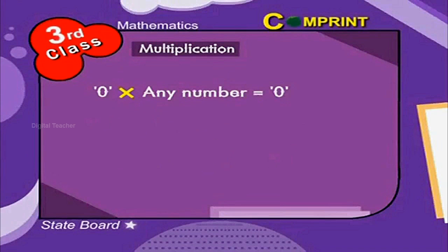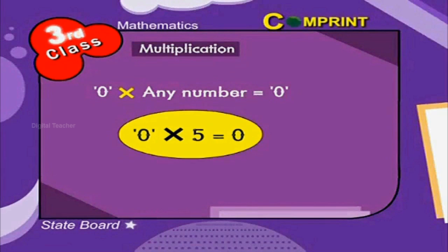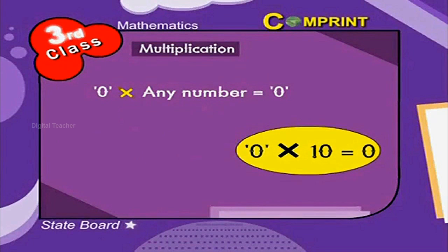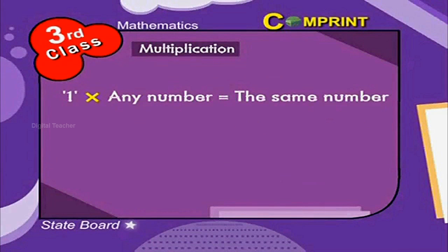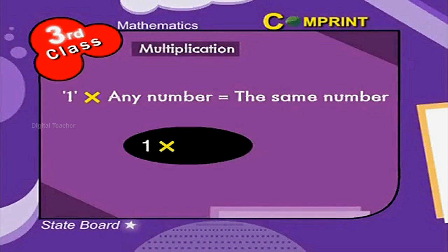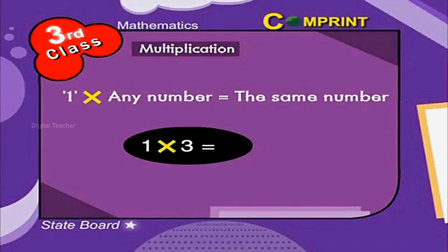0 into any number is equal to 0. For example, 0 into 5 is equal to 0, and 0 into 10 is equal to 0. 1 into any number is equal to the same number. For example, 1 into 7 is equal to 7, and 1 into 3 becomes 3.